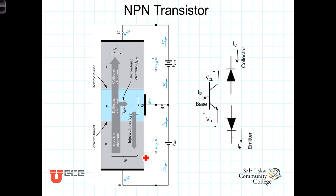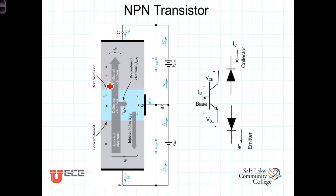The idea that electrons in the base can continue across the reverse biased base-collector junction may seem counterintuitive and deserves more attention. Because of the external voltage applied across the base-collector junction, it is reverse biased with a depletion region, which prevents hole current from flowing from the base to the collector. But the polarity of that voltage is such that electrons that make it into the base are swept across that voltage gradient from the base into the collector. Thus, the forward biased base-to-emitter junction injects electrons into the base, and the reverse biased base-collector voltage carries them across the base and into the collector.